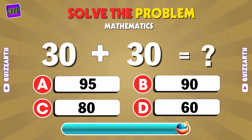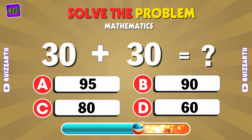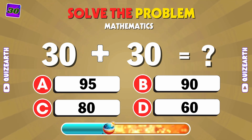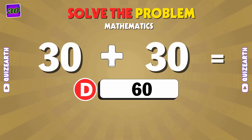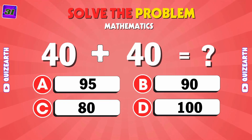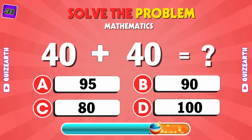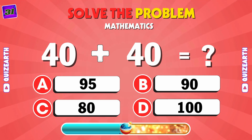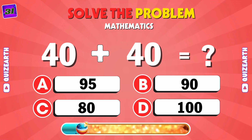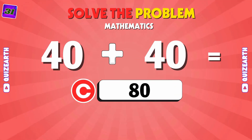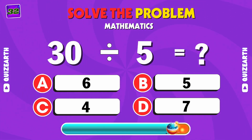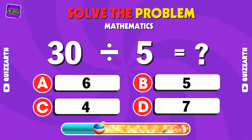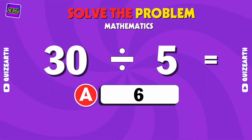This one is super easy. Let's find out what 30 plus 30 equals. D: 60. What's 40 plus 40? C: 80. Here we have 30 divided by 5 — can you guess the answer? A: 6.